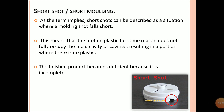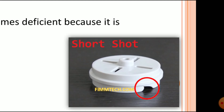The next defect is short molding or a short shot. This means that for some reason, the molten plastic does not fully occupy the mold cavity or cavities, resulting in portions where there is no plastic in your component. The finished product becomes deficient because it is incomplete. As you can see in the image, due to some restrictions inside the cavity, some portion of your component is not filled with plastic.